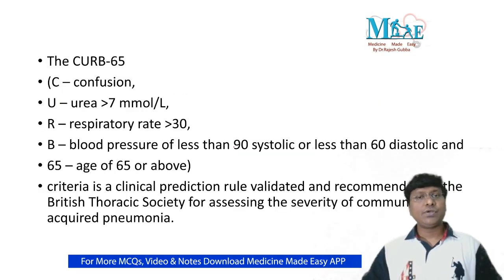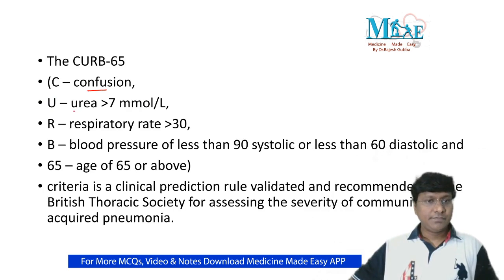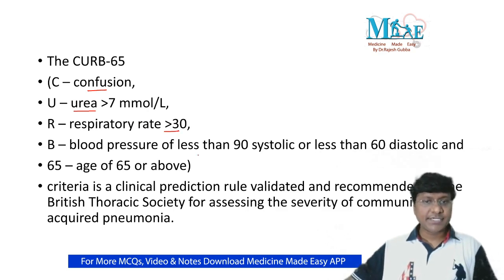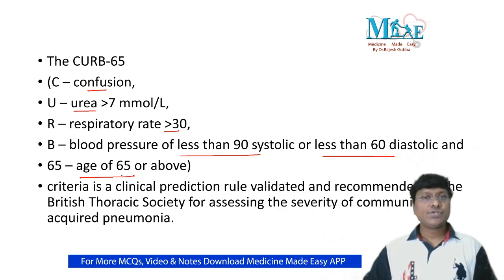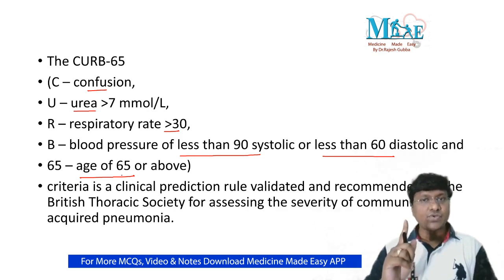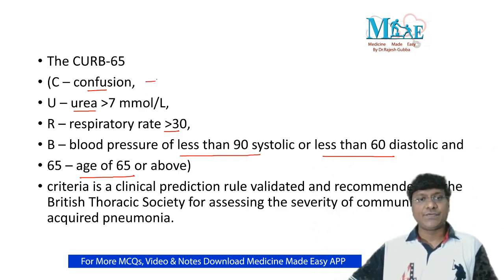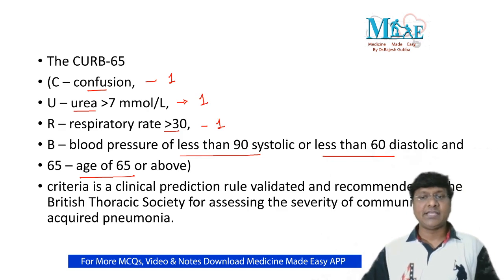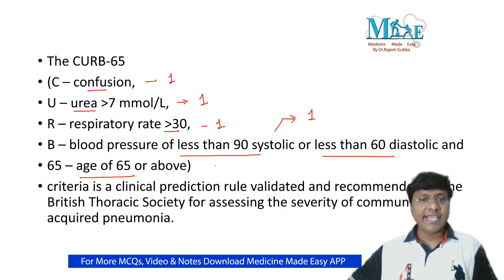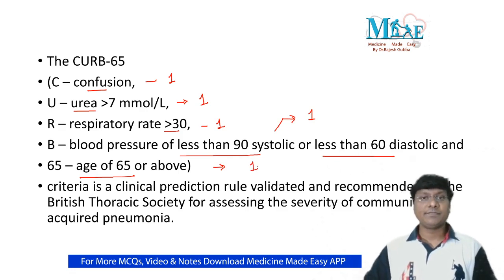The components of CURB-65 are: C stands for confusion, U is urea more than 7 millimoles per litre, R is respiratory rate more than 30, B is blood pressure less than 90 systolic and less than 60 diastolic, and 65 refers to age 65 or above. A score of 1 is given for each parameter that is present in the individual.